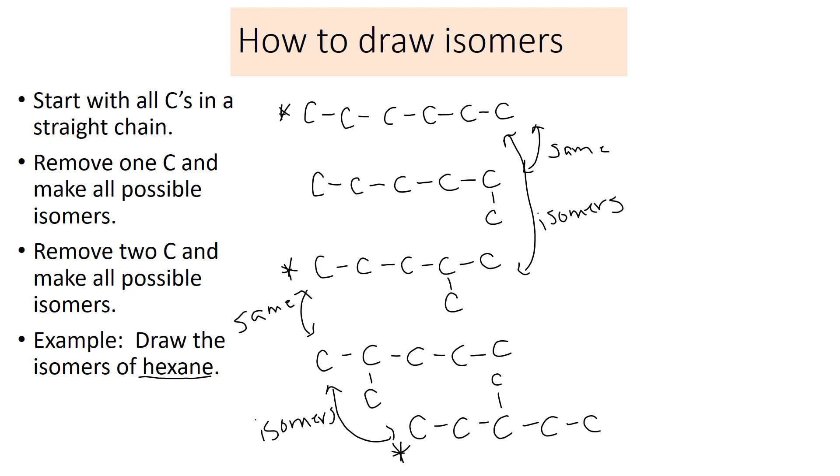Now I'm going to look at taking two carbons off. I'm going to make four carbons. If I take two off, would I put them here? No, that's no good because now these are the same. I still have six carbons in a row. That's not an isomer, that's the same molecule.